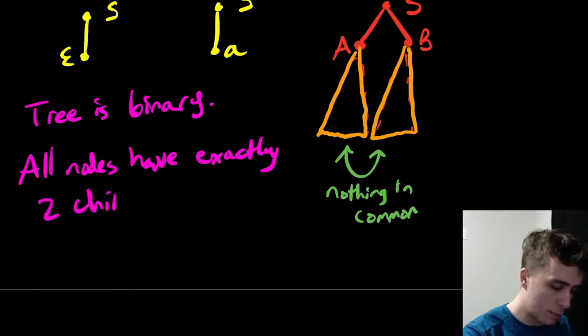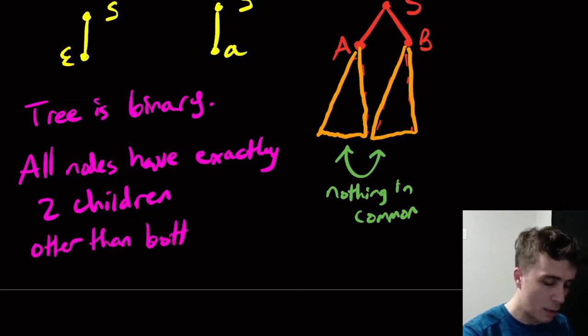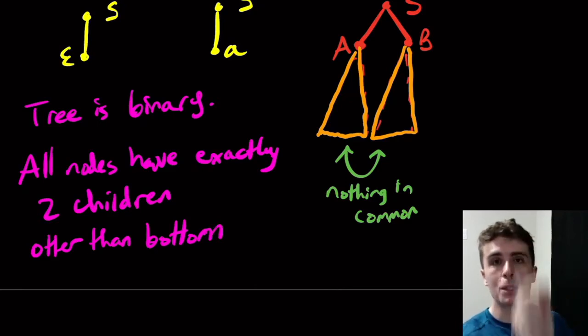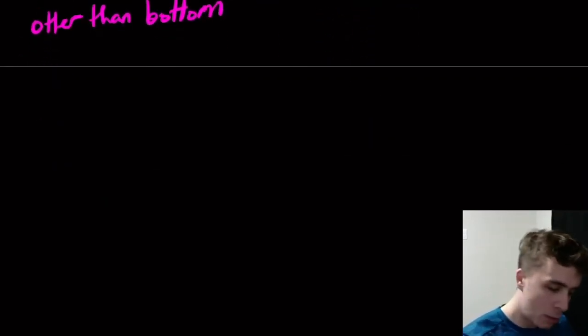So all nodes have exactly two children except for the ones at the bottom, which either have one or zero. The one child ones are the ones where the variable produces a single terminal and the ones that have zero children are the terminals themselves.